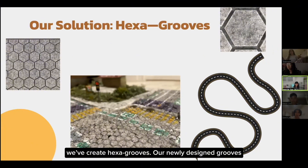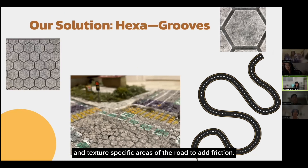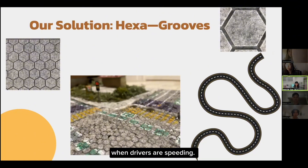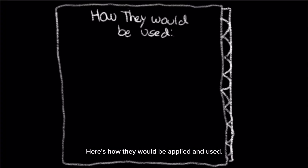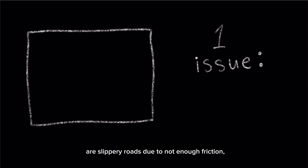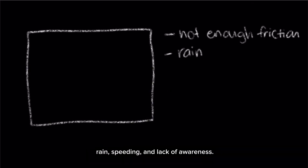Our newly designed grooves turn ordinary road grooves into hexagonal indents, which carry the perks of being able to irrigate rainwater more efficiently and texture specific areas of the road to add friction. This extra friction will help prevent skidding, which can be especially dangerous when drivers are speeding. As mentioned before, some of the biggest issues we are facing are slippery roads due to not enough friction, rain, speeding, and lack of awareness.